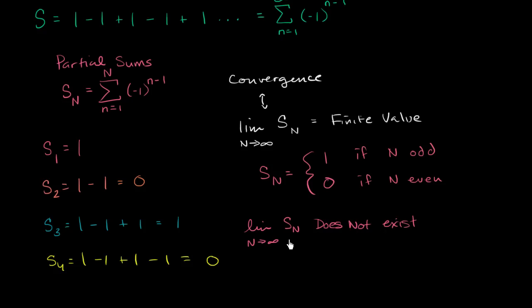So this right over here does not exist. It's tempting because it's bounded, it keeps oscillating between 1 and 0, but it does not go to one particular value as N approaches infinity. So here we would say that our series S diverges.